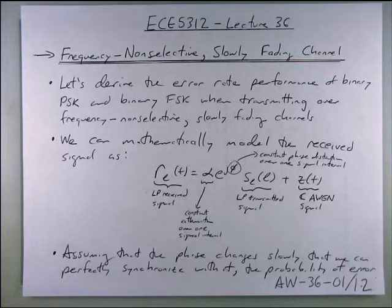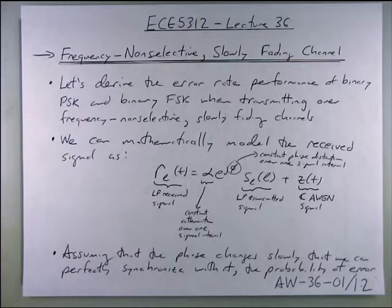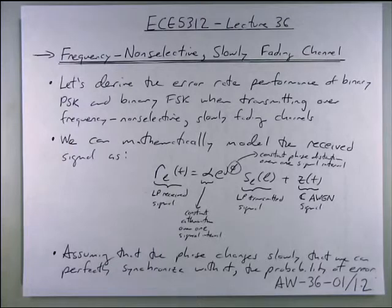The attenuation is constant — no time variation whatsoever. There's also an exponential term that induces some sort of constant phase rotation. Constant attenuation and constant phase rotation — how often do we encounter that in real life? We multiply the attenuation and phase rotation on the low-pass transmitted signal s_L(t), and we add complex white Gaussian noise to this mix.